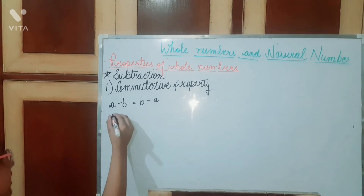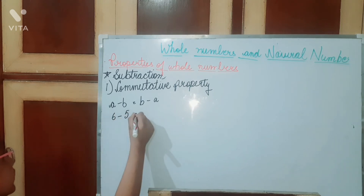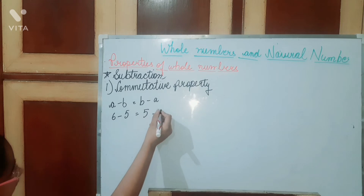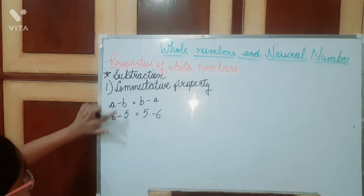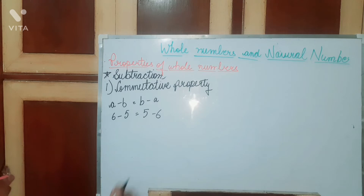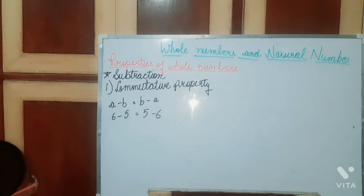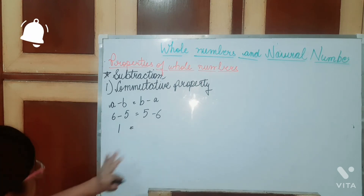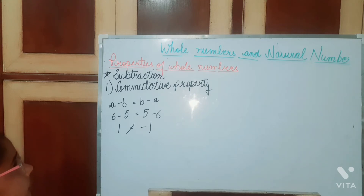Let's take 6 minus 5 and 5 minus 6. We have given the role of A to 6 and B to 5, and on the other side we have exchanged their places. Now 6 minus 5 is 1, but if we subtract 6 from 5, the answer will be minus 1, and this is not equal. So commutative property does not hold for subtraction — it holds for addition but not for subtraction.